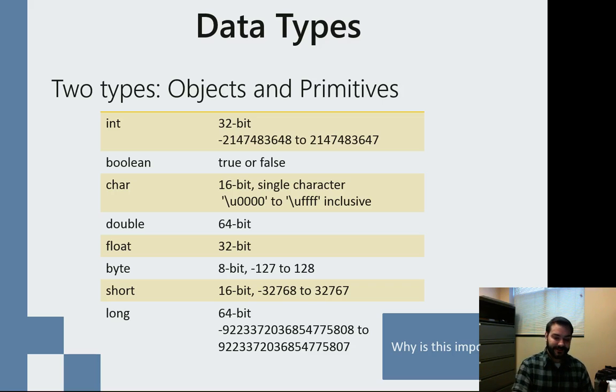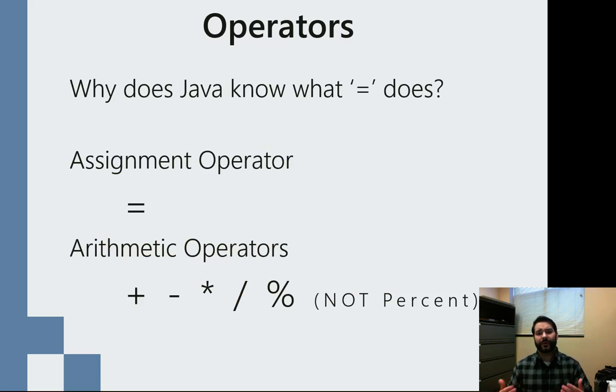Now that we've started to create these variables, one of the things we have to do is look at all the different operators that we can use in conjunction with that. We start with the basic operators, the ones that we've already talked about. For example, that equal sign.